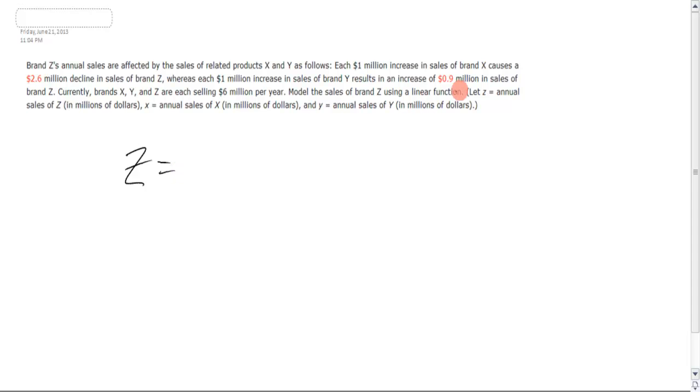You've got Z equaling, and then you found the slope for X and Y. You see each one million increase in brand X causes a 2.6 million decline in Z, so therefore for every one that X goes up, Z goes down 2.6.